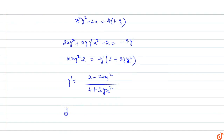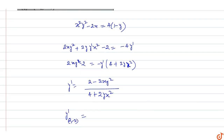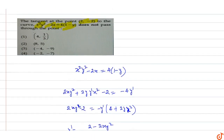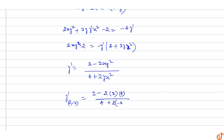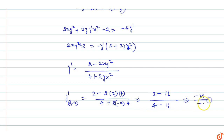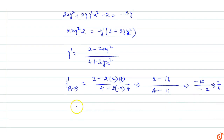Now y' at the point (2, -2) gives the slope of the tangent. Substituting x = 2, y = -2: numerator is 2 - 2(2)(4) = 2 - 16 = -14; denominator is 4 + 2(-2)(4) = 4 - 16 = -12. So slope = -14/-12 = 7/6.